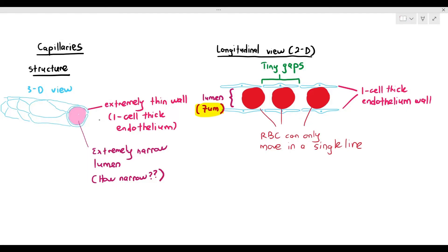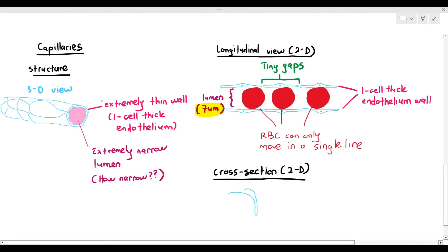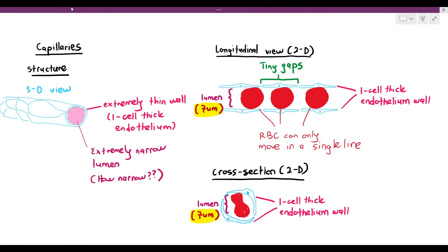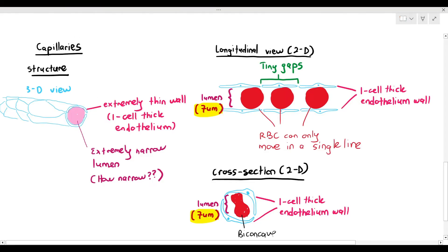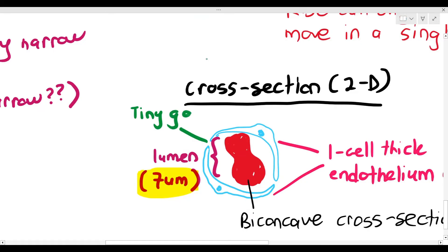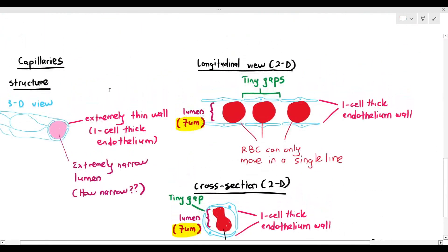Drawing out the capillary in a cross-section, you can also appreciate the one-cell thick endothelium wall. You can see the lumen is 7 micrometers, and there is a beam-like structure — that biconcave cross-section of the red blood cell — as a reminder that only one red blood cell can pass at a time. I'm just going to label the tiny gaps there so that you can see them too.